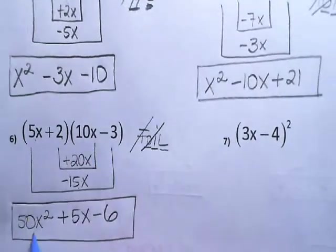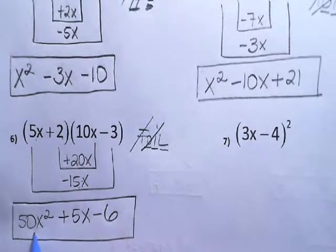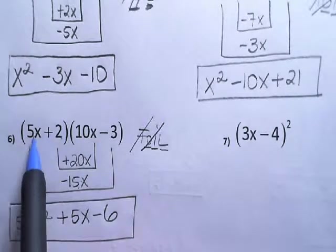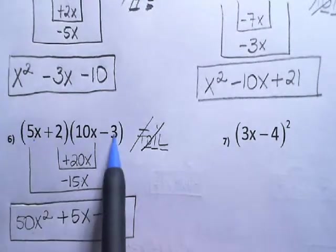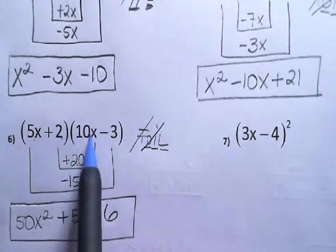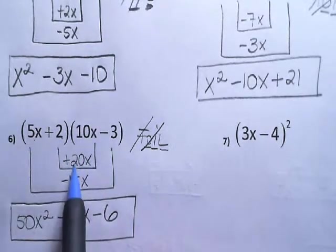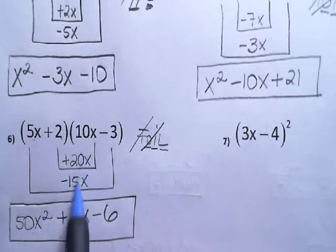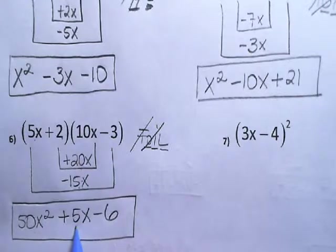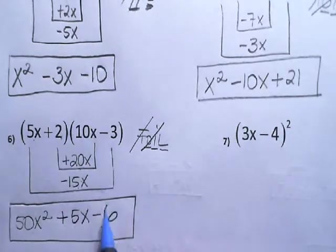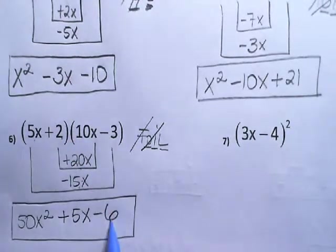So to recap: first times first is 50x squared. Outside times outside gives you negative 15x. Inside times inside gives you 20x. Combine the two gives you positive 5x. Last times last gives you negative 6.